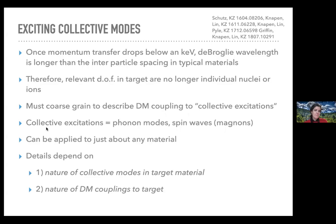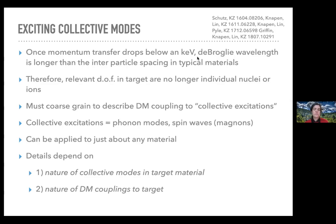This is a very general concept applying to just about any material, though the details depend on the nature of the collective modes, the target material, and the nature of the dark matter coupling to the target. MeV-mass dark matter, because its velocity is on the order of 10⁻³c, has a momentum transfer on the order of keV. So MeV mass is what generically demarcates where collective excitations will always be relevant. That said, especially for certain mediator types, even for dark matter with mass above an MeV, collective excitations can be highly relevant for dark matter detection.